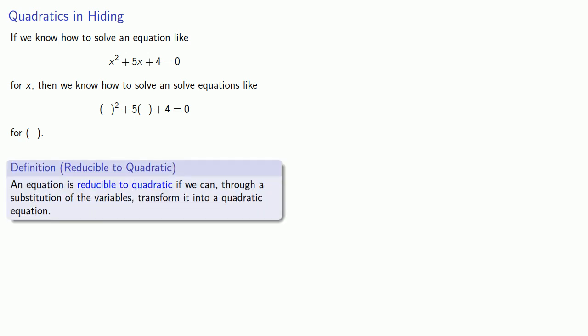We say that an equation is reducible to quadratic if we can, through some substitution of the variables, transform it into a quadratic equation.